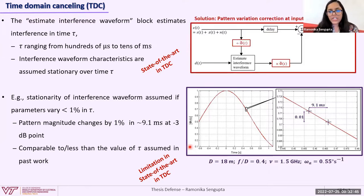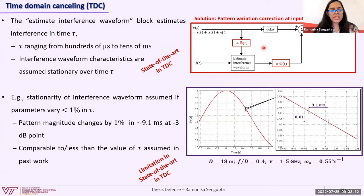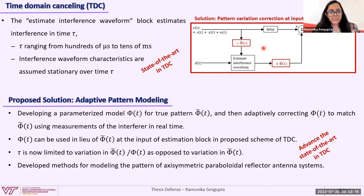This problem of pattern variation can be solved by correcting it at the input of the estimation block, but the antenna pattern for large reflectors is not known accurately and is potentially varying with time due to mechanical variations. Since the true pattern is not known accurately and is difficult to measure or analyze, we need sufficiently accurate pattern models that can be implemented in the scheme. This is where adaptive pattern modeling comes into picture. In this work, we have proposed adaptive pattern modeling, where we develop a parameterized model phi for the true pattern phi-twiddle, and then adaptively correct phi to match phi-twiddle using measurements of the interferer in real time.